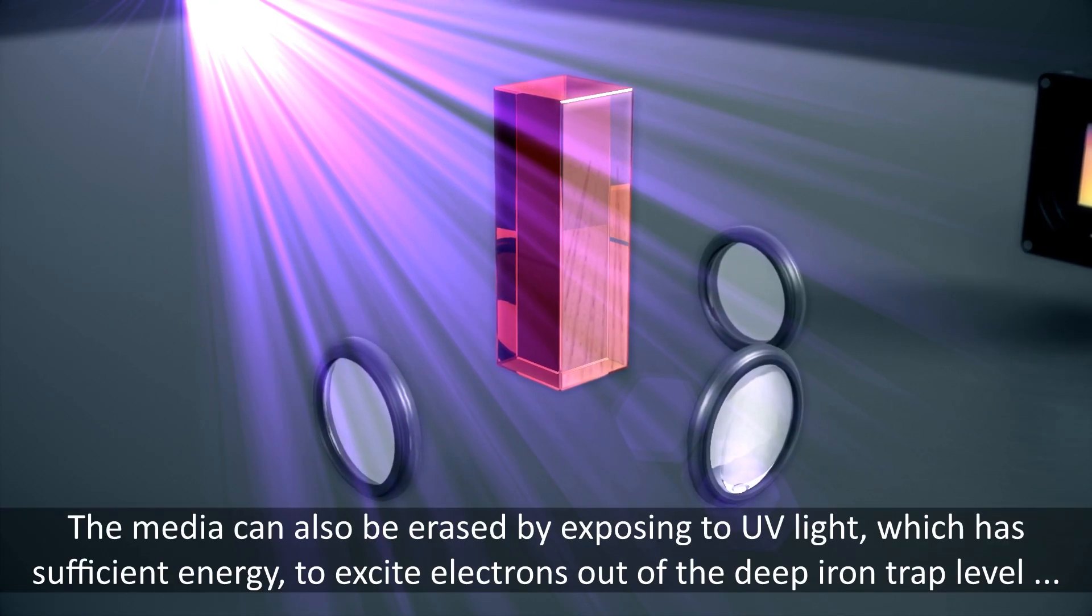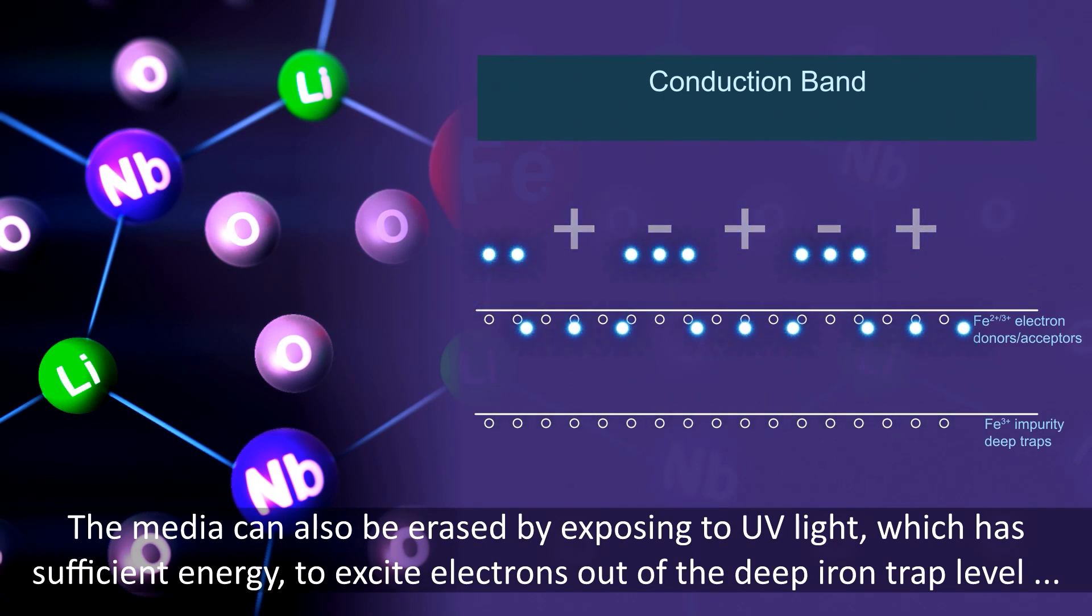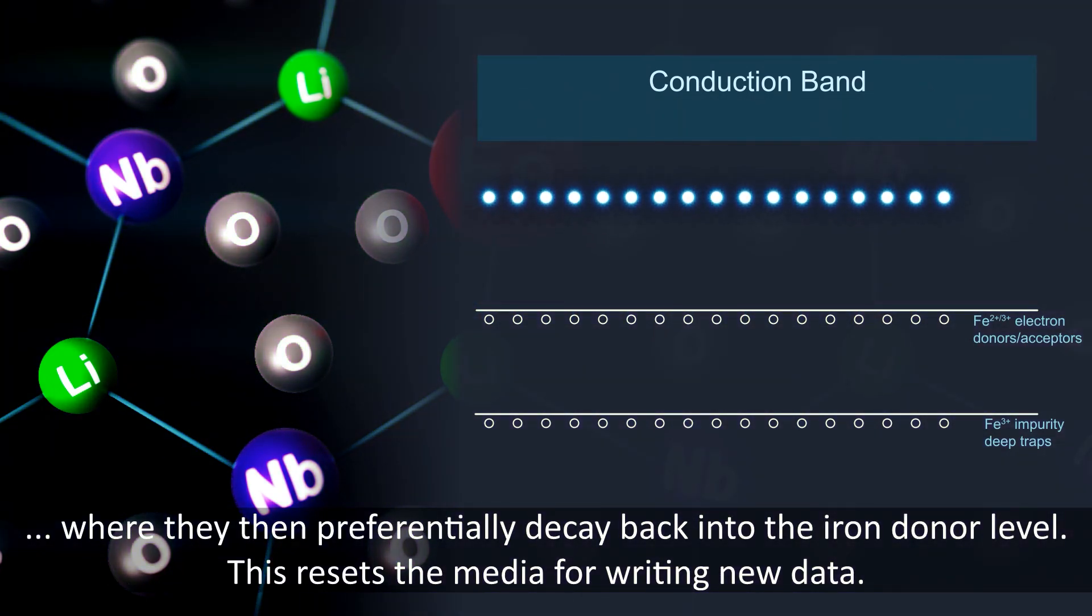The media can also be erased by exposing to UV light which has enough energy to excite electrons out of the deep trap levels where they then preferentially decay back into the iron donor level. This resets the media for writing new data.